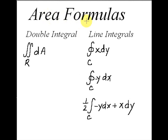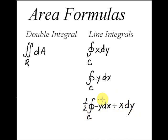Here's a summary of the area formulas. The double integral formula is the double integral over region R of dA. For line integrals, assuming a closed path C that is the boundary of the region, we have: the line integral over C of x dy, or the line integral over C of negative y dx, or combining the two, the line integral over C of negative y dx plus x dy gives double the area, so we take half of that. The third formula looks more complicated, but in some cases it gives an easier integral to work with.